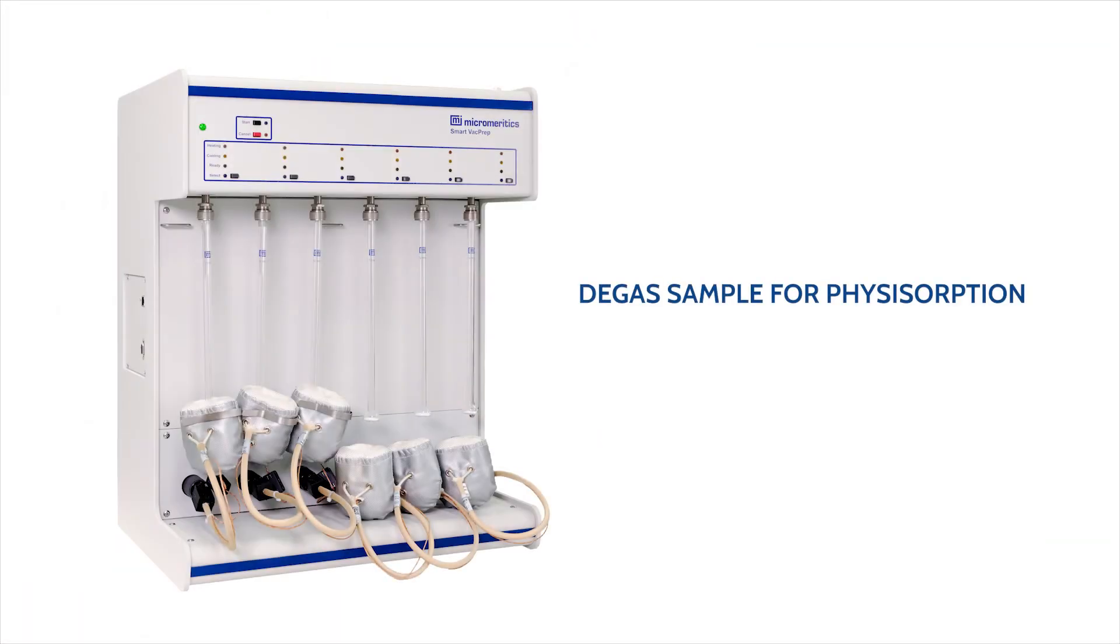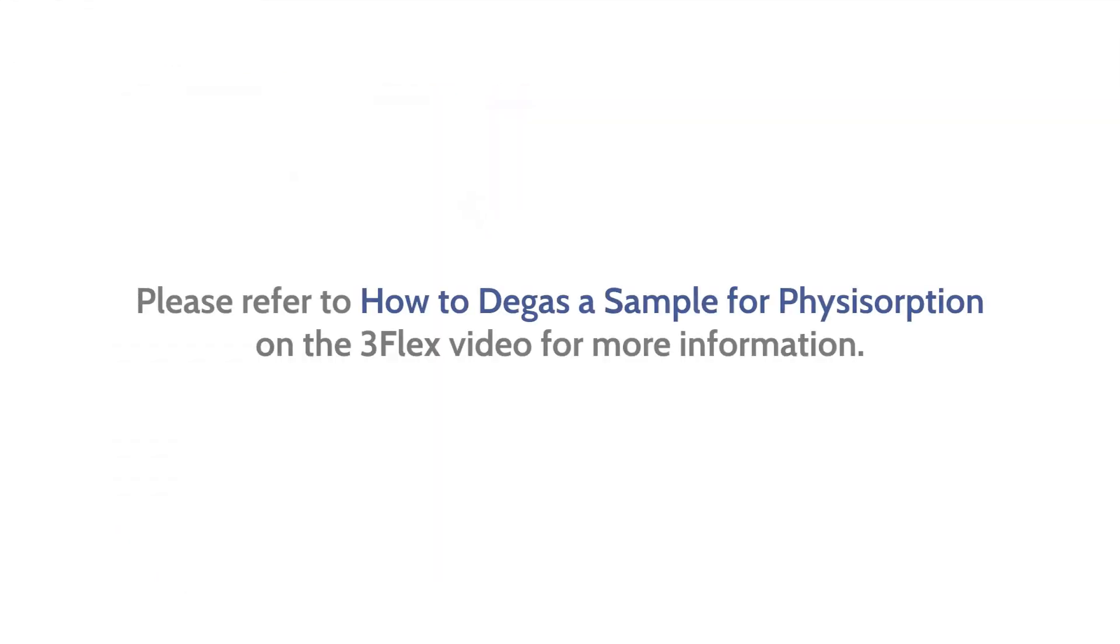Degas your sample on a degas unit either with flowing inert gas or under vacuum. After the degas is complete, record the after degas mass. This mass will be used for the report. Please refer to the How to Degas Sample for Physisorption Analysis video for more information.